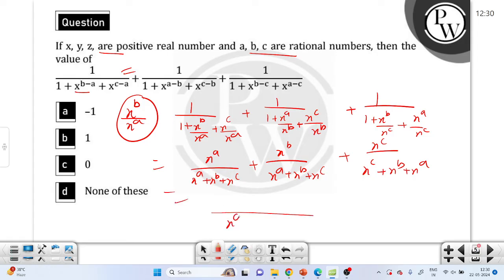And overall common LCM here x to the power a plus x to the power b plus x to the power c. And this option number is x.